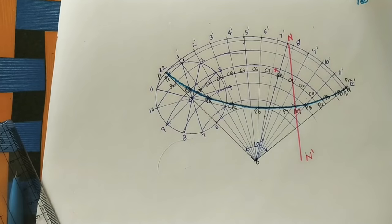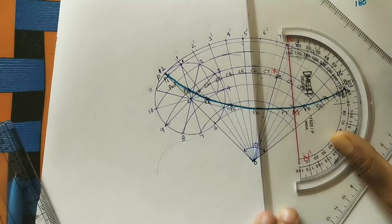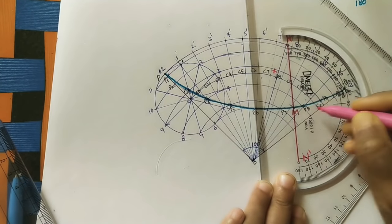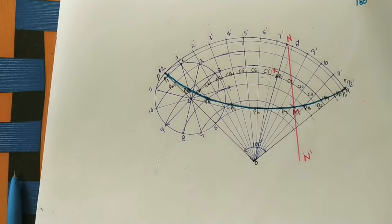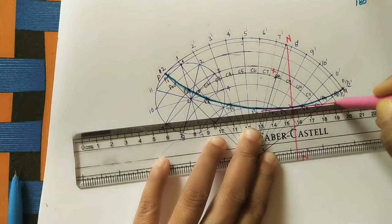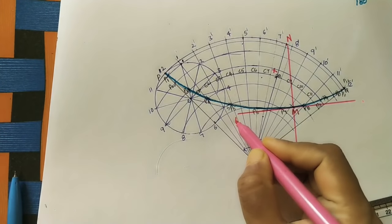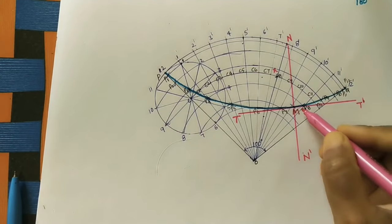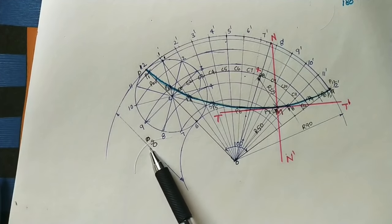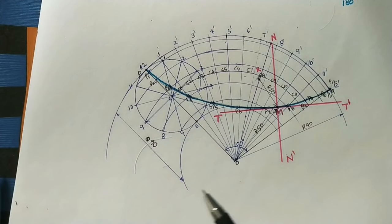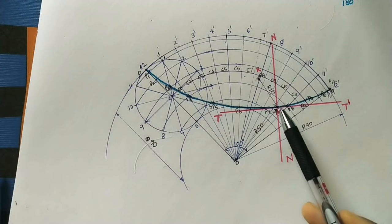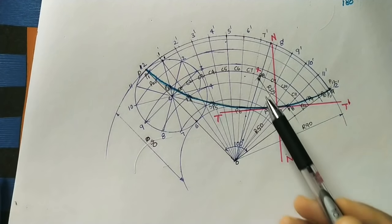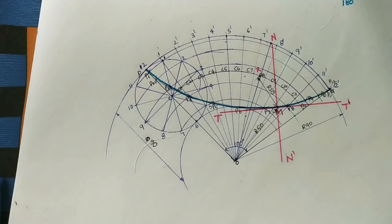Join N to M — this is the normal, labeled N-N'. Since the tangent is perpendicular to the normal (90 degrees), draw T-T' through M perpendicular to N-N'. Mark the dimensions: smaller circle diameter 50 mm, bigger circle radius 90 mm, M point is 50 mm from center O, and MX distance is the radius of the smaller circle = 25 mm. This completes the hypocycloid with tangent and normal. For epicycloid and cycloid videos, the links are in the description. Thank you for watching.